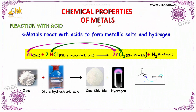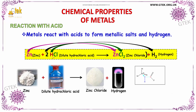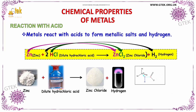Now let us see the reaction of metal with acid. Here we have taken zinc as a metal. The metal reacts with acid — the acid taken is HCl, that is dilute hydrochloric acid. The metal reacts with acid to form some metallic salt and hydrogen. The metallic salt yielded from zinc is zinc chloride, that is ZnCl2, plus hydrogen.